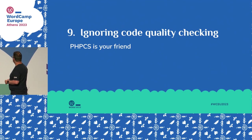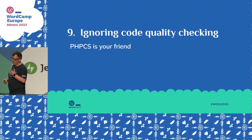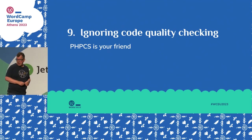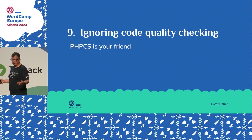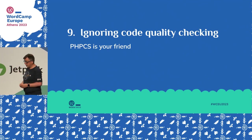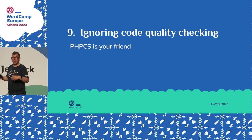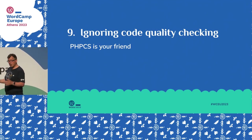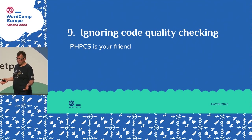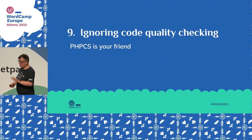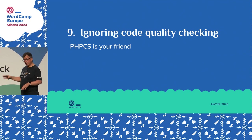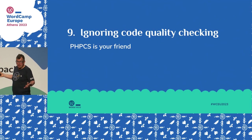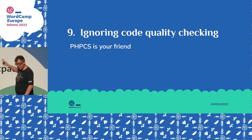Number nine: ignoring code quality checking — PHPCS is your friend. There are lots of tools available for developers to check the quality of their code and ensure it follows standards and guidelines. PHPCS in particular is the one I use; there are WordPress-specific rule sets you can plug in. The hardest bit is just installing it in the first place — once you're over that hurdle it gets easier. You can integrate it directly into your code editor. It covers off many things I've been talking about, including accessibility and security issues that Mika was talking about.